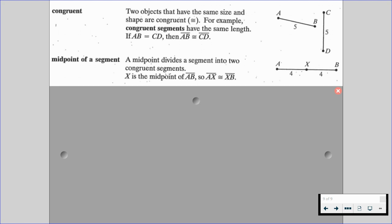We also have the midpoint of a segment. A midpoint divides a segment into two congruent segments. So if point X is the midpoint of segment AB, that means that segment AX is congruent to segment XB, or the length of AX is equal to the length of XB because they both have a value of four.